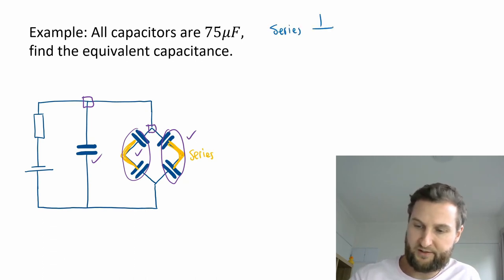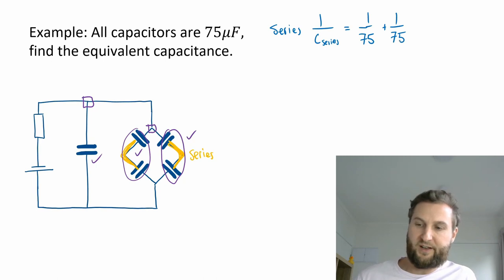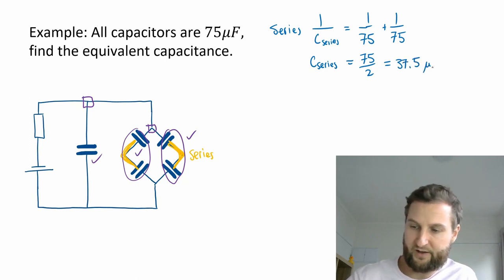So capacitors in series. This will be 1 over C series. These are both 75, so 1 over 75 plus 1 over 75. So that's 2 over 75. And then you flip it back, which is 75 over 2, and that's going to be 37.5 microfarads.